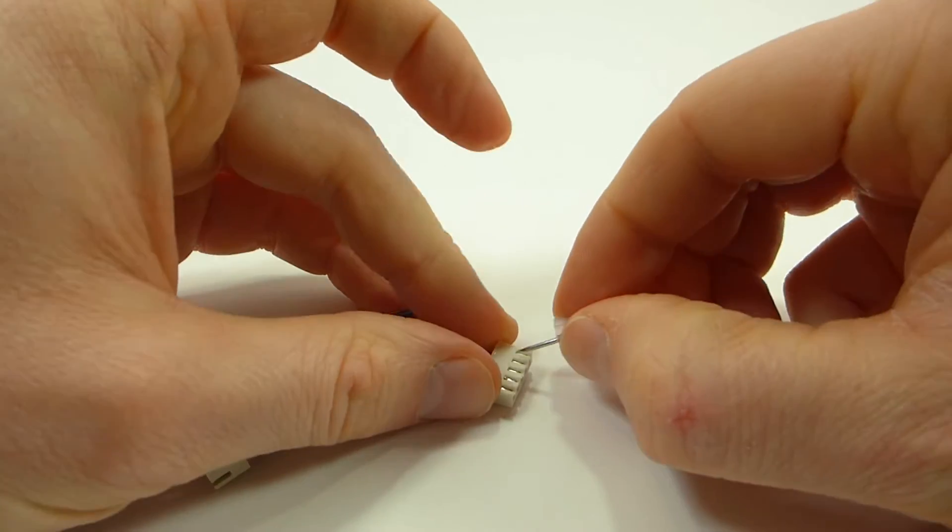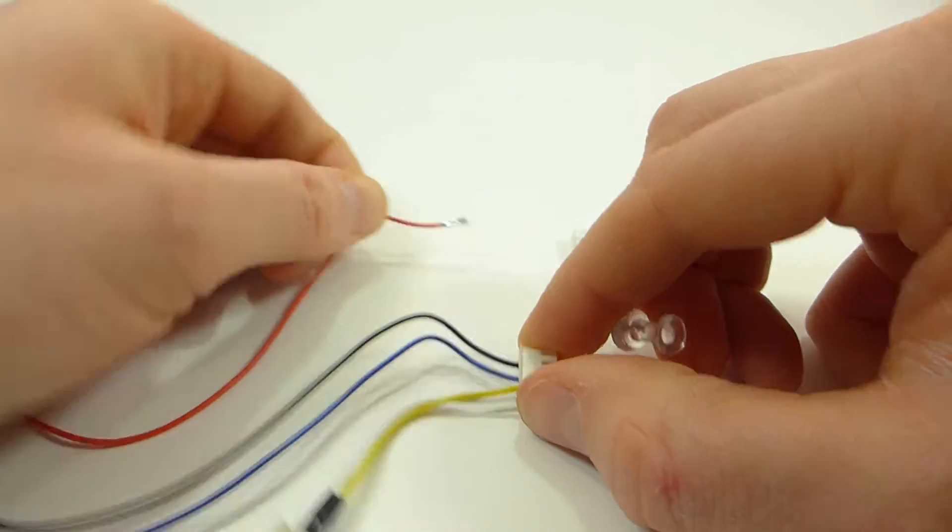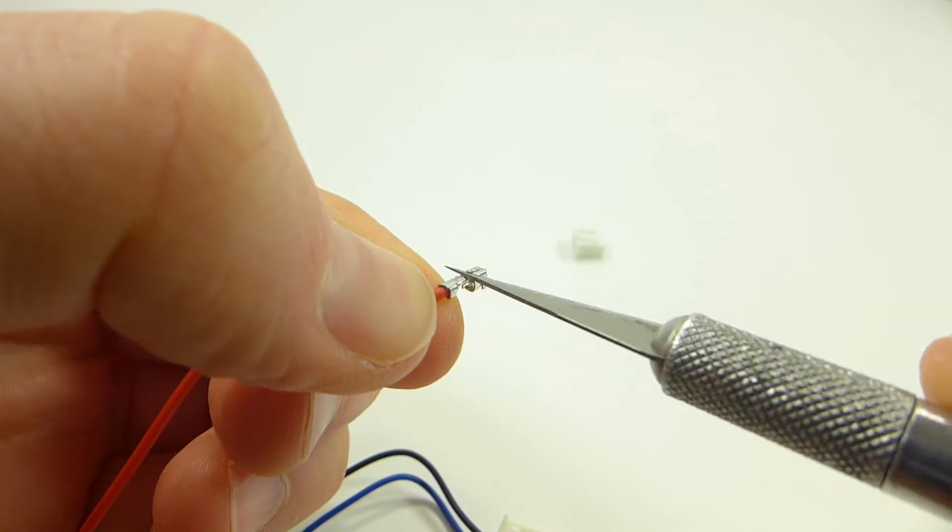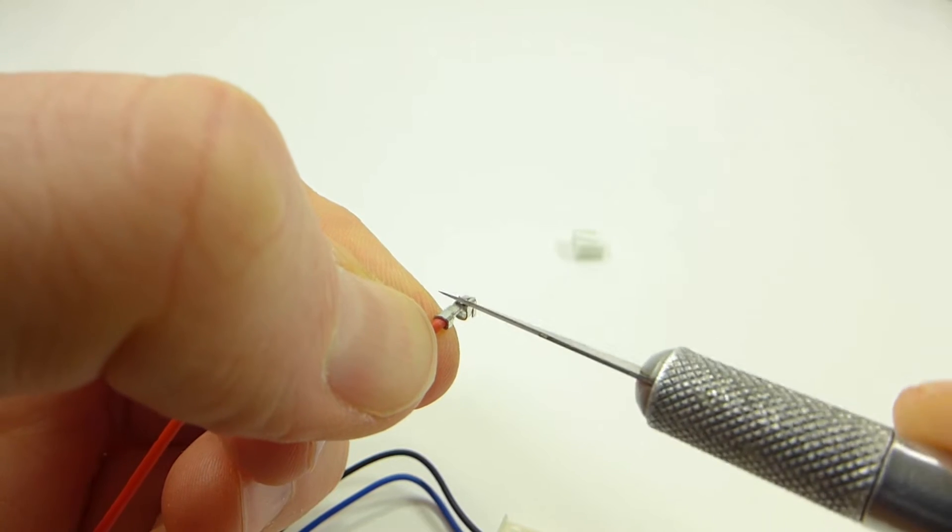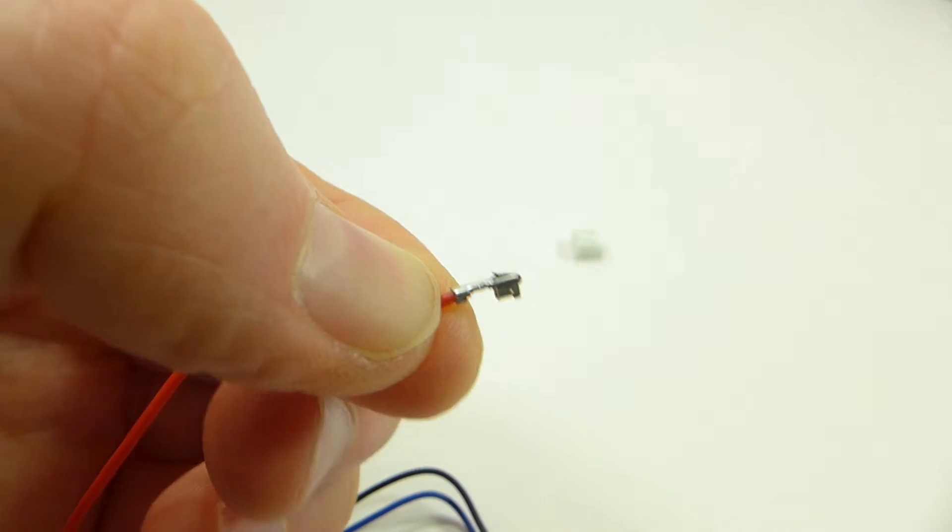Now to get the pins out of the old plug we use the thumbtack to press down the little tab and pull them out. Of course when we do this we'll have squashed tabs, so use the knife to spring it back up. That way when we put it into the new plug it won't fall out.